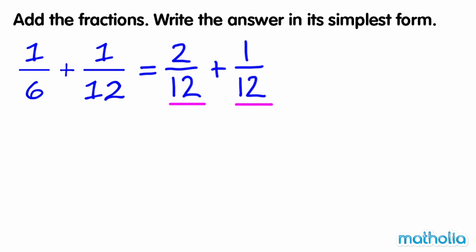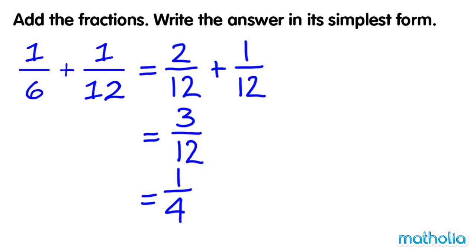So we can add the fractions by adding the numerators. Two plus one equals three, so two-twelfths plus one-twelfth equals three-twelfths. We can simplify three-twelfths by dividing the numerator and the denominator by three to give one-quarter. So one-sixth plus one-twelfth is equal to one-quarter.